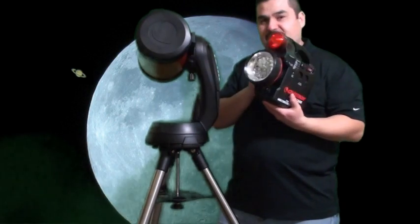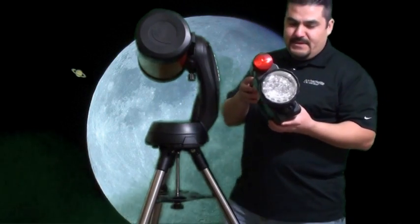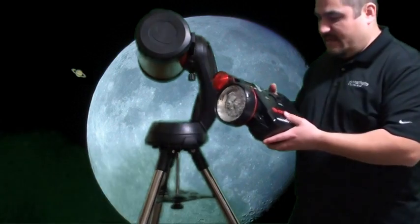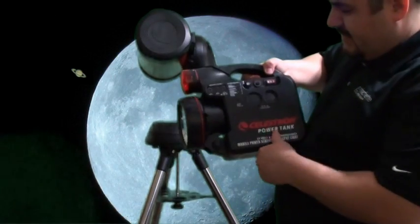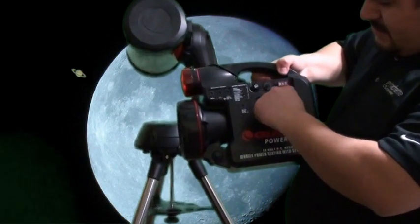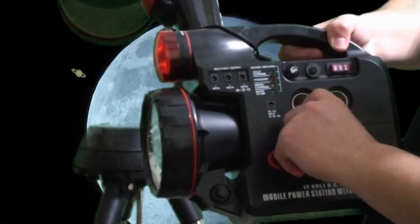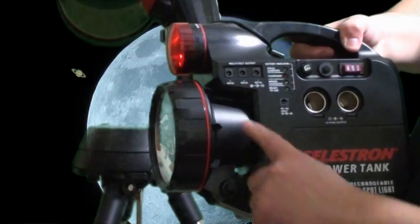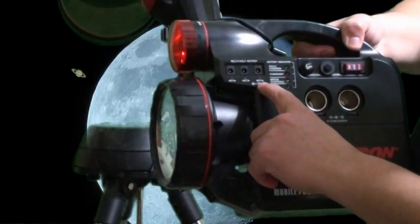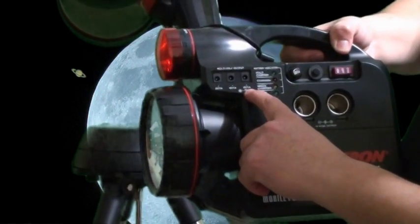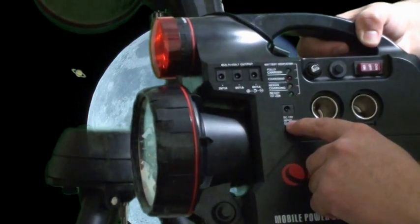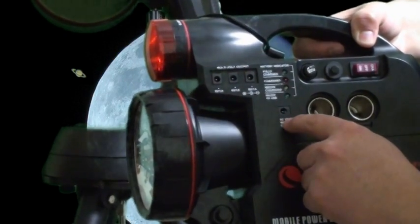Okay, this is the power tank. The power tank, as you can see here, has some connections that mimic your car's lighter. There's two of them. There's a three volt, a six-volt, and a nine volt inlets here.